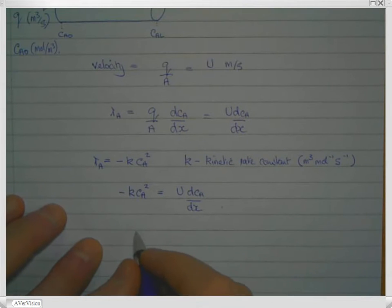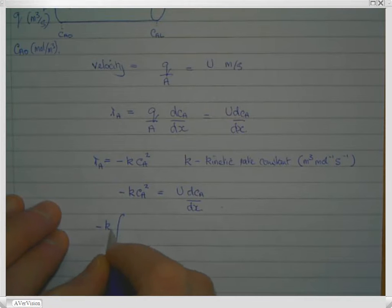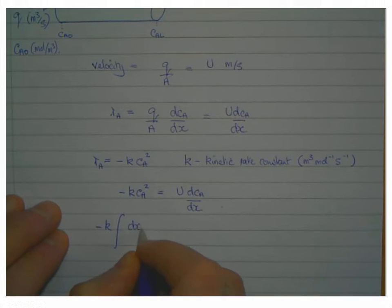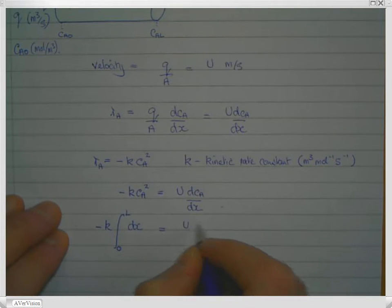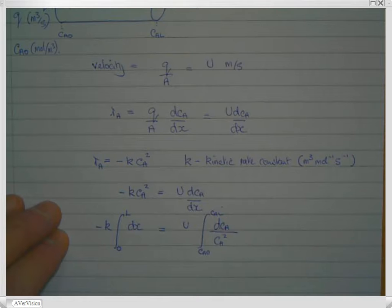If we do that, we can do the integration, take the dx across here, and we can get that minus K times the integral dx, and we're going to integrate from x equals naught to x equals L, is equal to U times the integral dCa over Ca squared. And we're going to integrate Ca from Ca naught to Ca L.